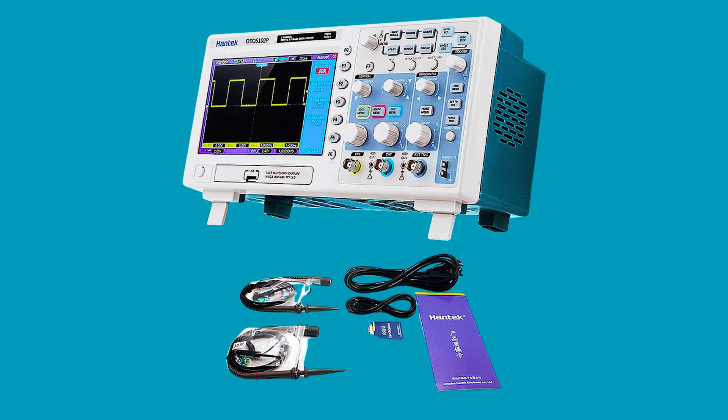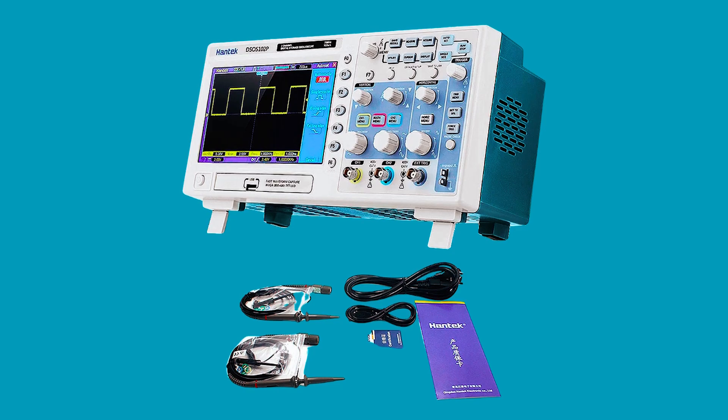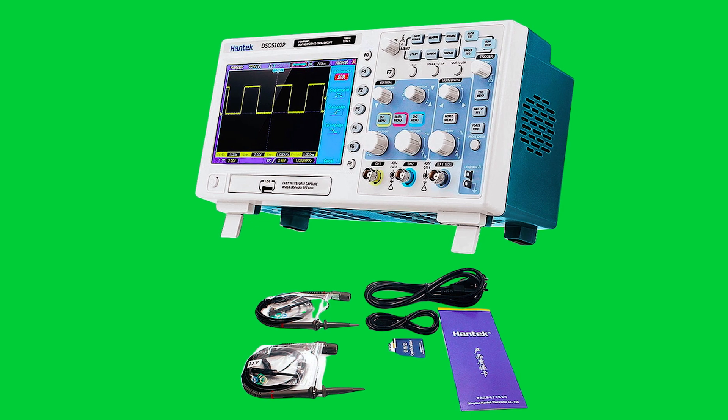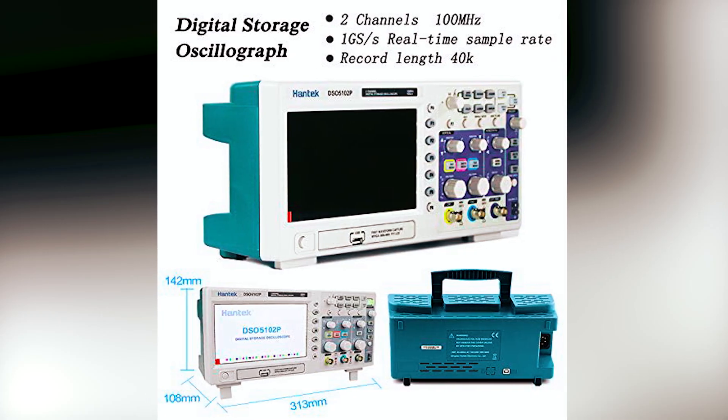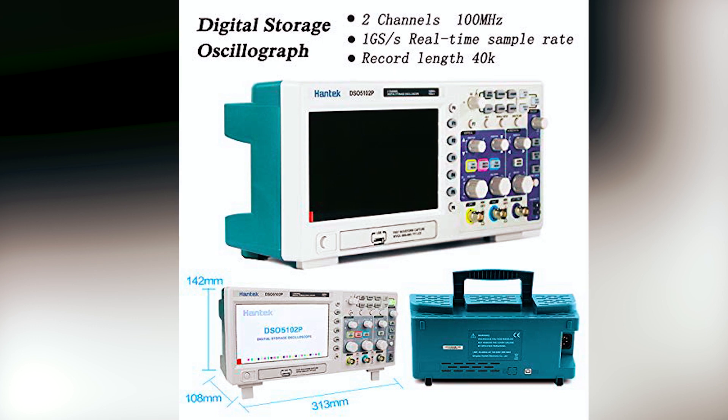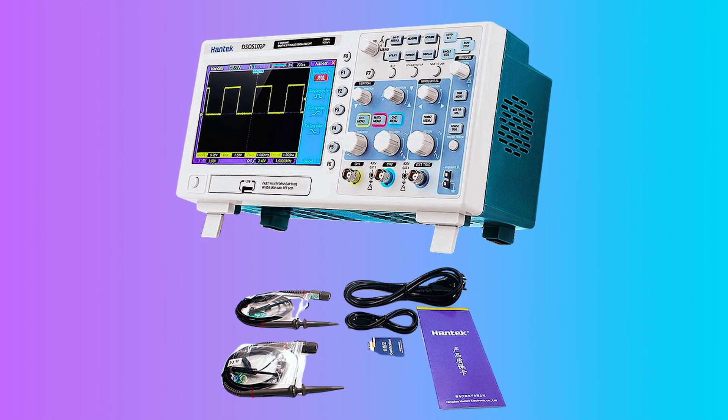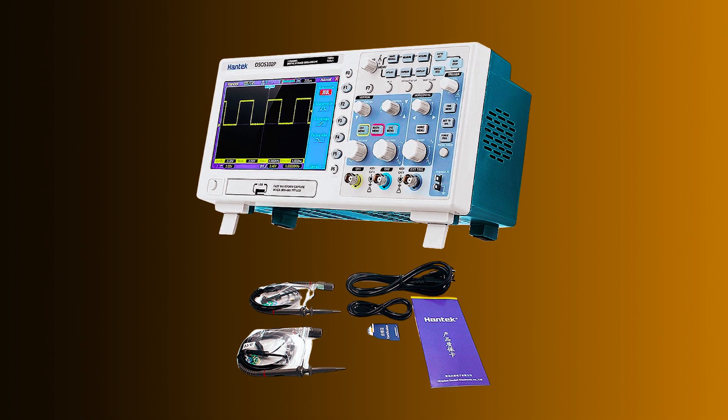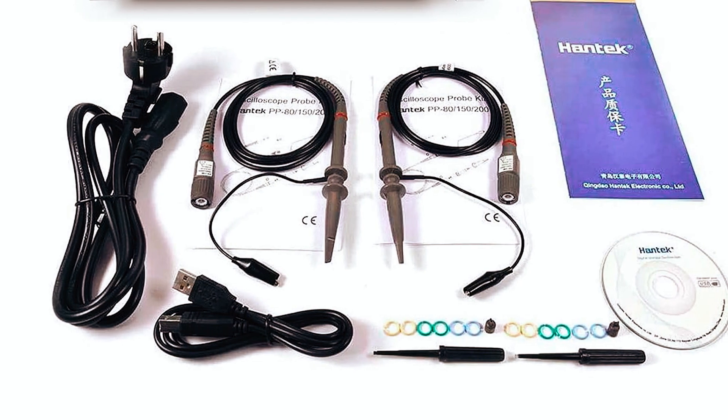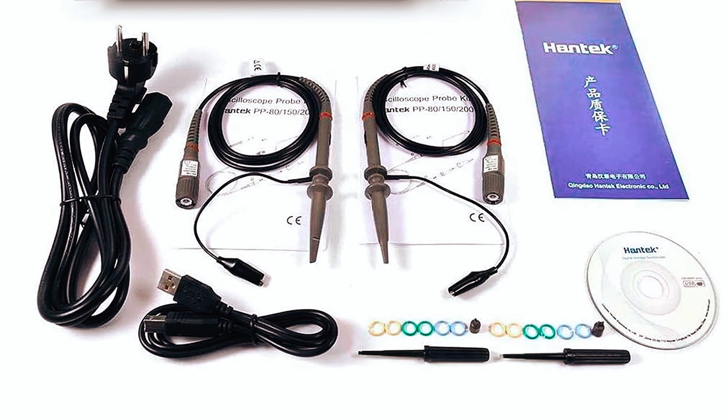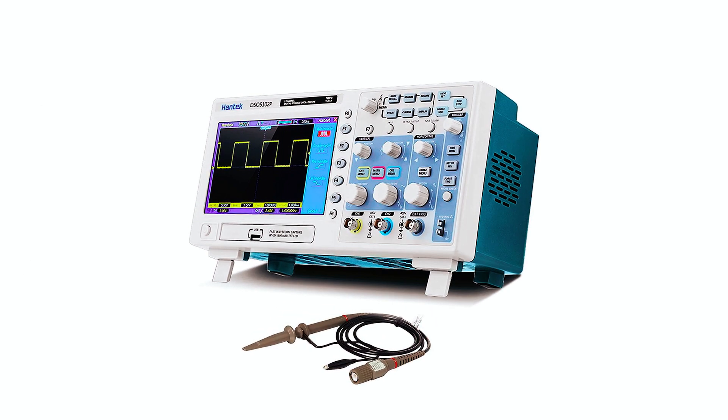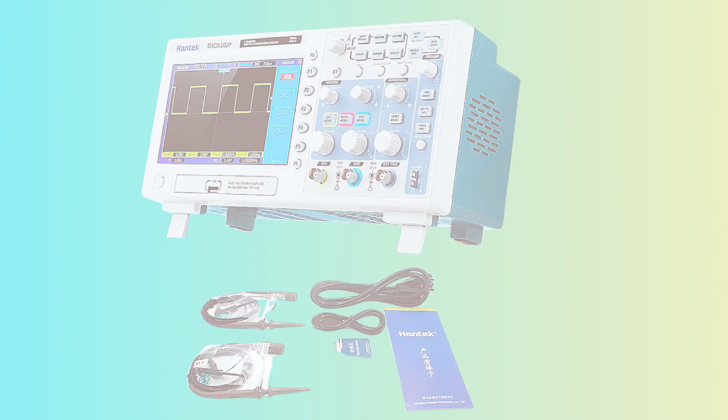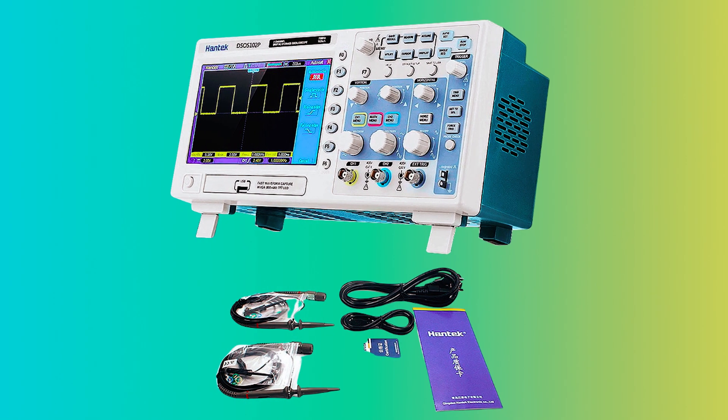The oscilloscope offers USB connectivity, allowing for remote control and U-disk storage. This enables convenient access to waveform information and easy upgrading. With a generous record length of up to 40K, it can store over 1,000 waveform data, ensuring ample storage capacity for analysis and comparison. Multiple automatic measurements, including format functions and FFTs, enhance the oscilloscope's functionality and enable comprehensive waveform analysis. The trigger mode for the edge, pulse width, line selectable video, slope, and overtime provides precise triggering options for capturing specific signals of interest.